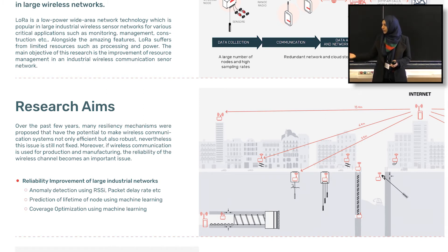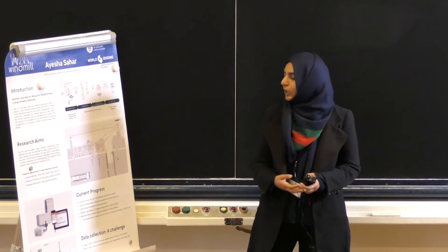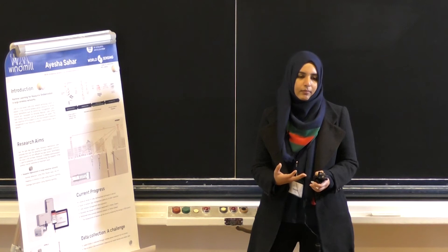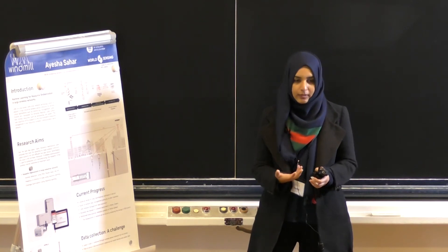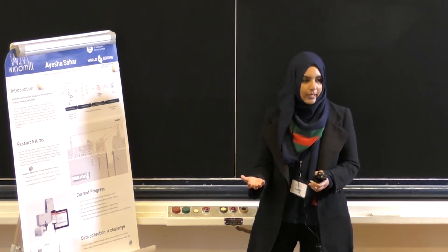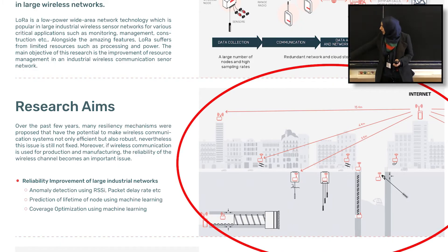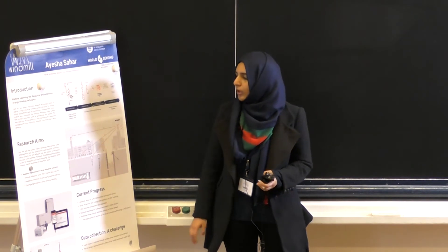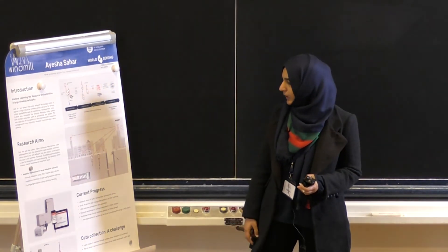And the next one is the coverage optimization. As I said, these are wide area networks so they can cover a large area. In theory we say that they will cover an area up to 15 kilometers in a circular radius, but this may not happen. As you can see in this diagram, these nodes are at different kinds of environments. Some of them are underground, some of them are at a height. So different kinds of interferences can happen which can reduce the coverage. So I will try to optimize the coverage through machine learning.